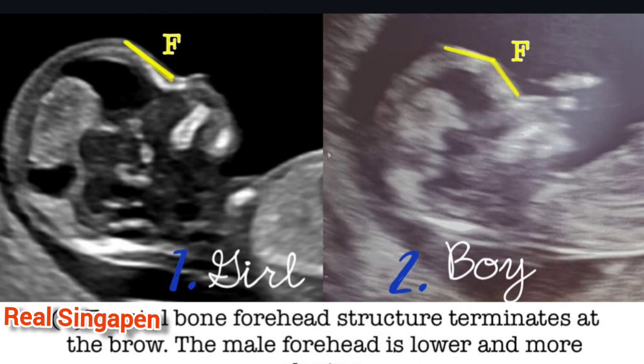Now you will see the skull. This is the skull. This is the shape of the skull. How do you know the scan report? That is why we are doing gender prediction. This is the skull theory. This is official. You will see 3 types.